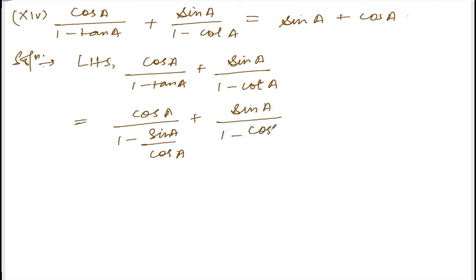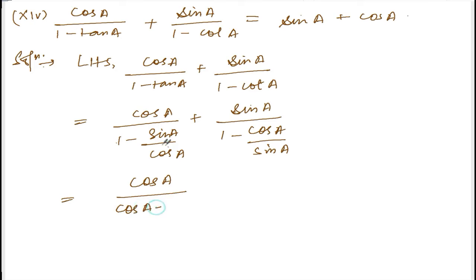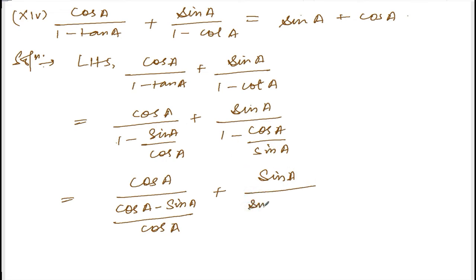So cos(a) divided by — when cos(a) comes to the denominator it becomes cos(a) minus sin(a), divided by cos(a). Plus sin(a) divided by — when sin(a) comes up it becomes sin(a) minus cos(a), divided by sin(a).